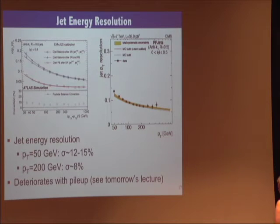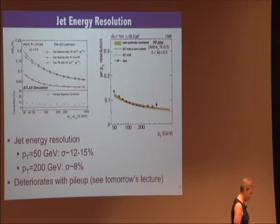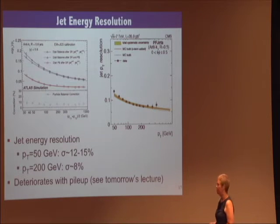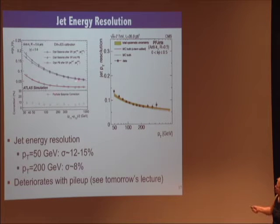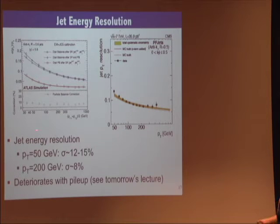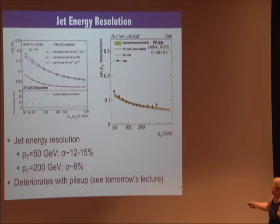The jet energy resolution is very critical — for instance if we look for high-mass resonances like a dijet resonance or a three-jet resonance, the better the resolution the better we can find it. For a 100 GeV jet we achieve about 10% resolution, getting better with higher PT — at around a TeV it's nearly as good as 5%. At low energies around 30 GeV it goes up to nearly 20%. CMS is quite similar to ATLAS.